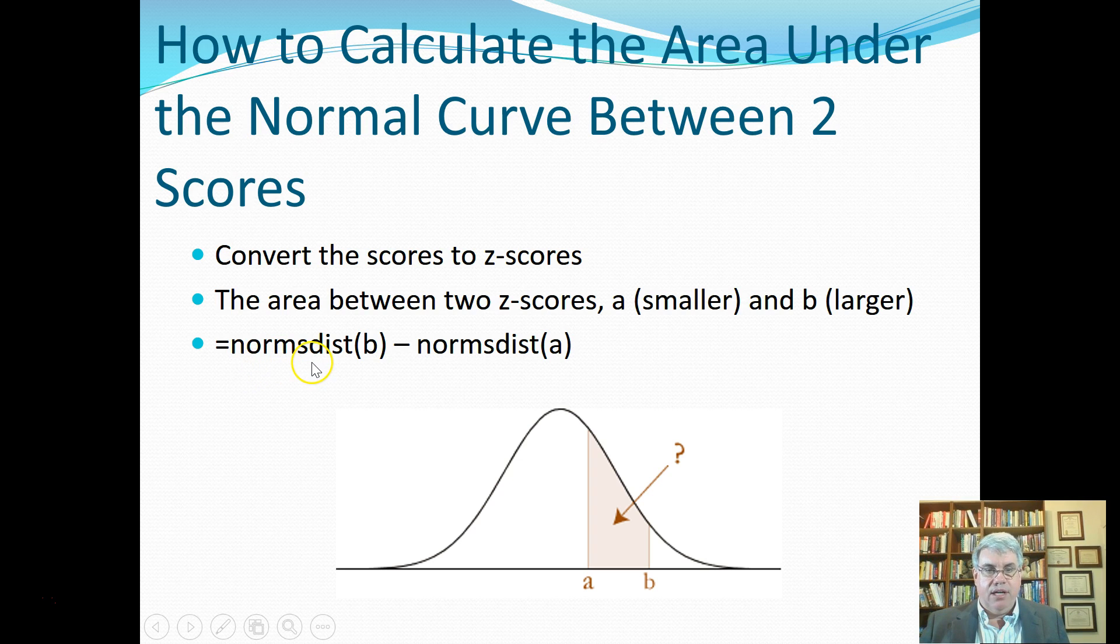Normal standardized distribution of B. So that's all the area to the right of B, and we're going to subtract that area, all the area that's to the right of A, normsdist of A. So let's see how that will work.